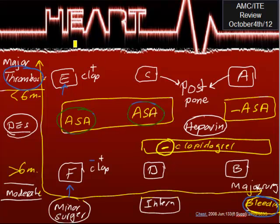Keep in mind: if you have no option to postpone surgery and it is less than six months since stent placement, you should postpone the surgery if possible. If you cannot postpone, stop aspirin, stop Plavix, and use heparin as a substitution bridge.